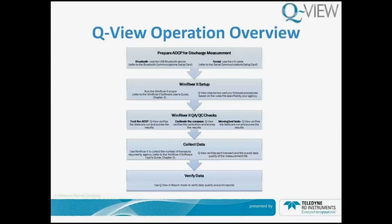The QView operation overview is quite simple. You prepare the ADCP for a discharge measurement and run your typical WinRiver 2 setup. WinRiver 2 will now do your quality assurance and quality control checks by testing the ADCP, calibrating the compass, and doing your moving bed tests.